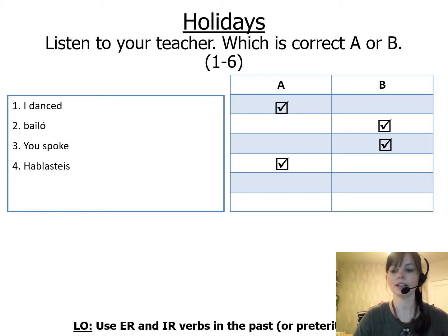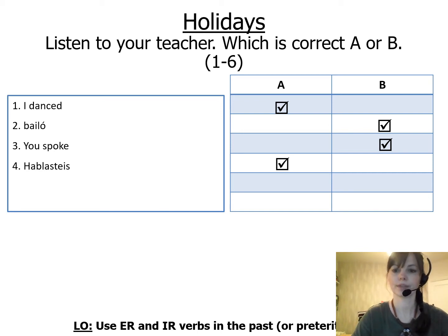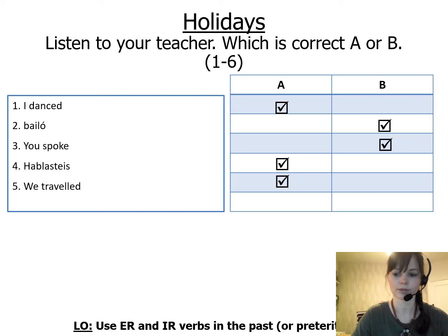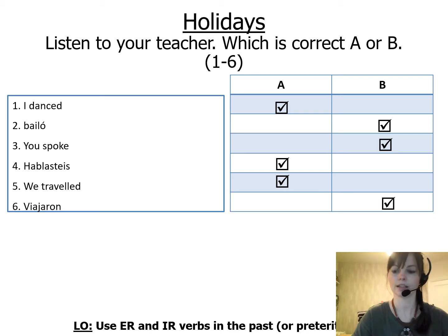Number five: is we travelled A, viajamos, or B? The correct answer is A. And finally, number six: is viajaron — A, I travelled, or B, they travelled? The correct answer is B, they travelled.